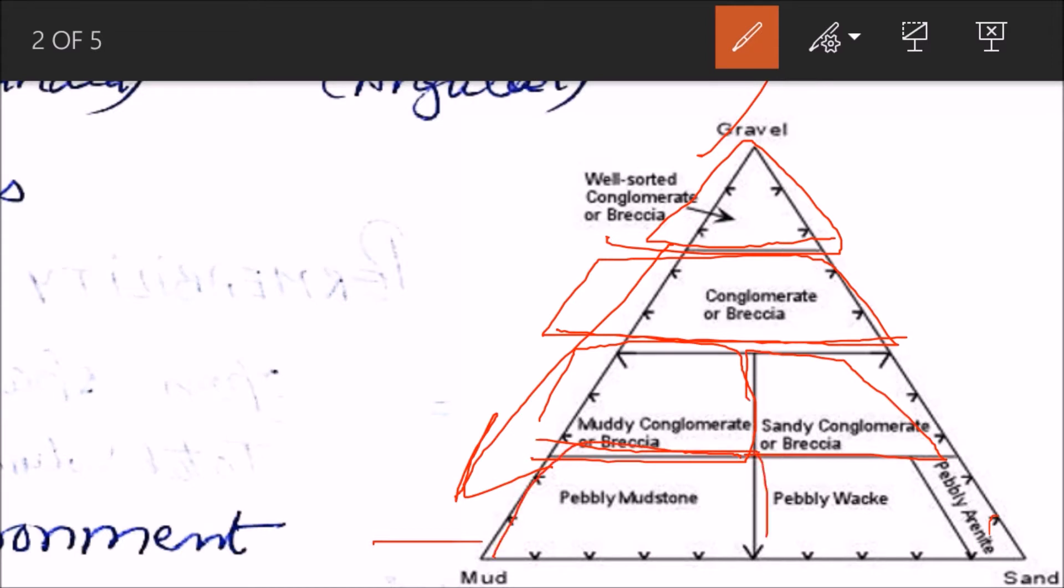Here it will be sandy conglomerates, then this will be pebbly mudstone. This will be pebbly wacke. Wacke will come to it in just a moment because sandstones are divided on wacke and arenites. So they can be pebbly arenites. The matrix is less than 10 percent.